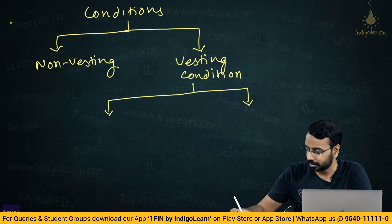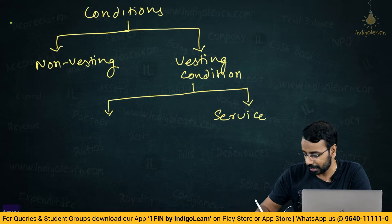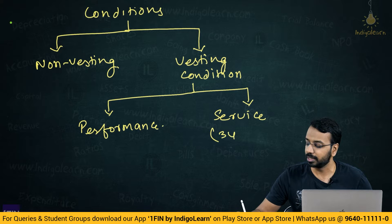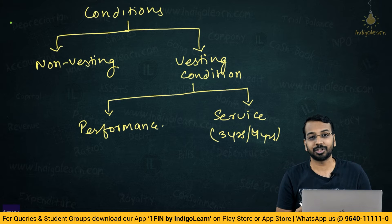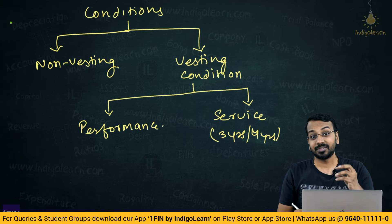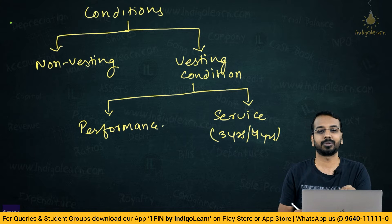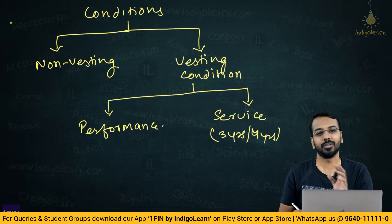Vesting conditions are further divided into two types: service condition and performance condition. The service condition means you have to work for a certain number of years, say 3 or 4 years. The performance condition means if certain performance parameters are met, then the employees would get those stock options — the stock options would vest upon the employees.